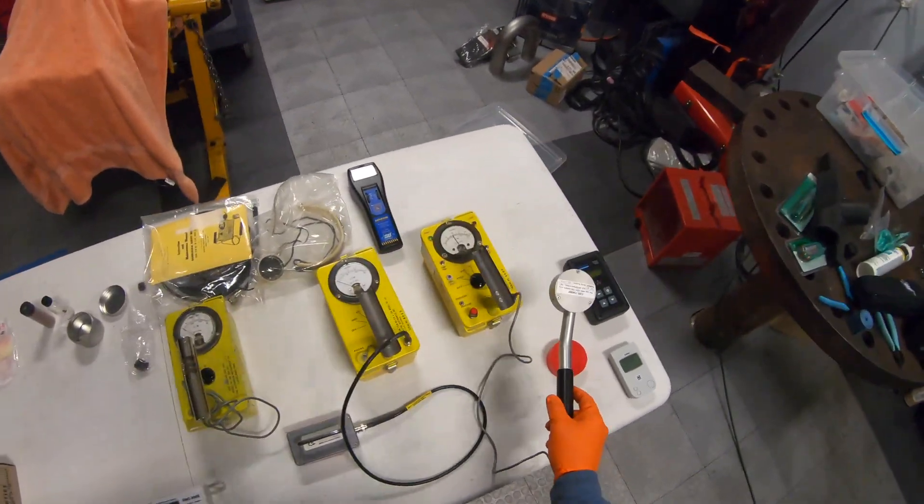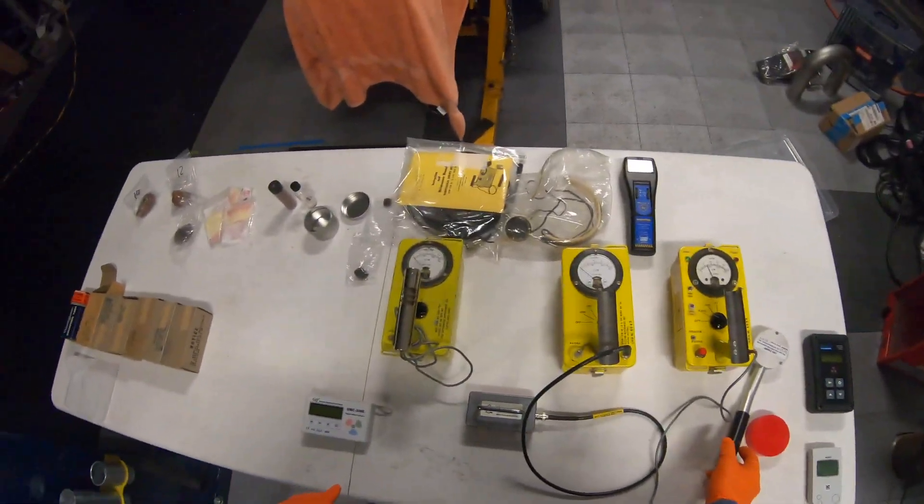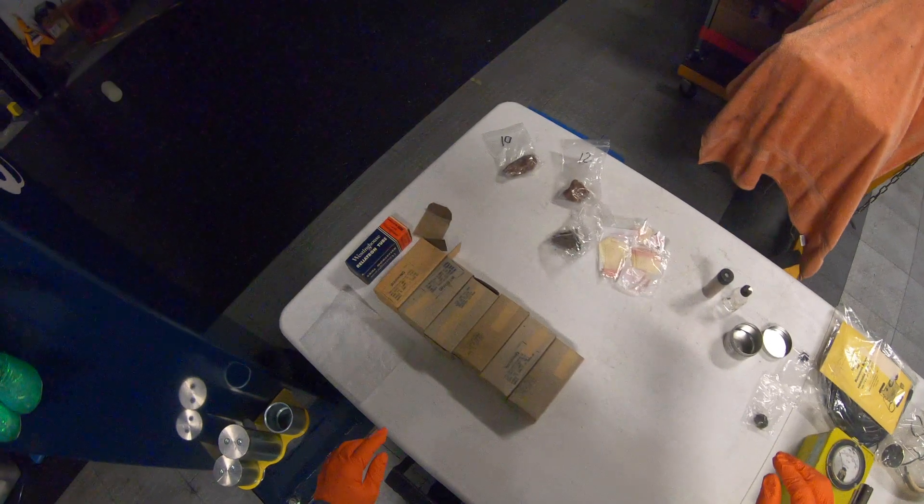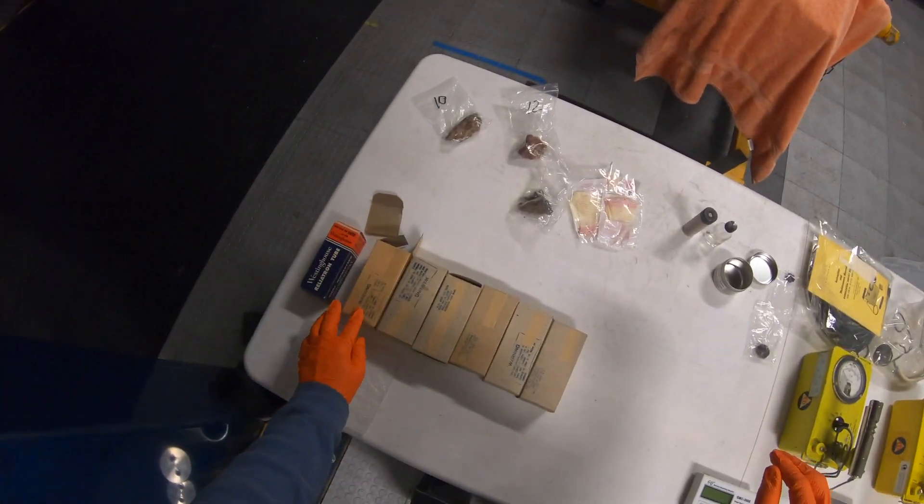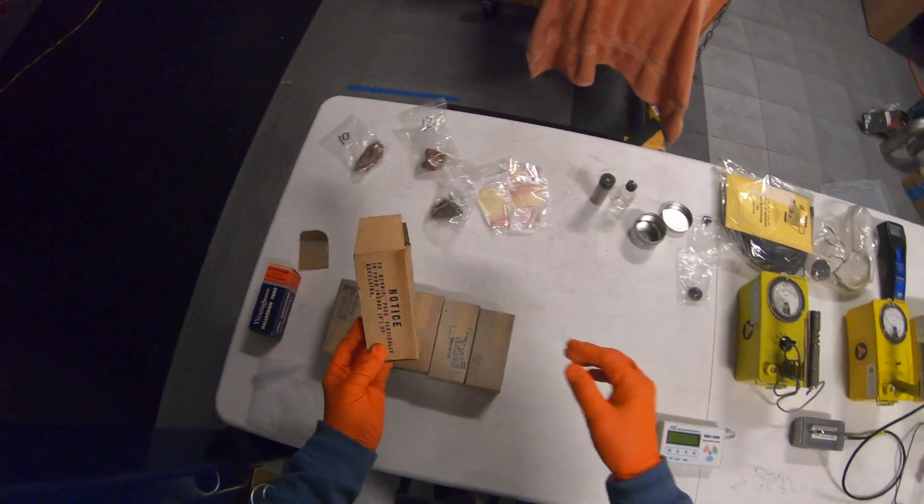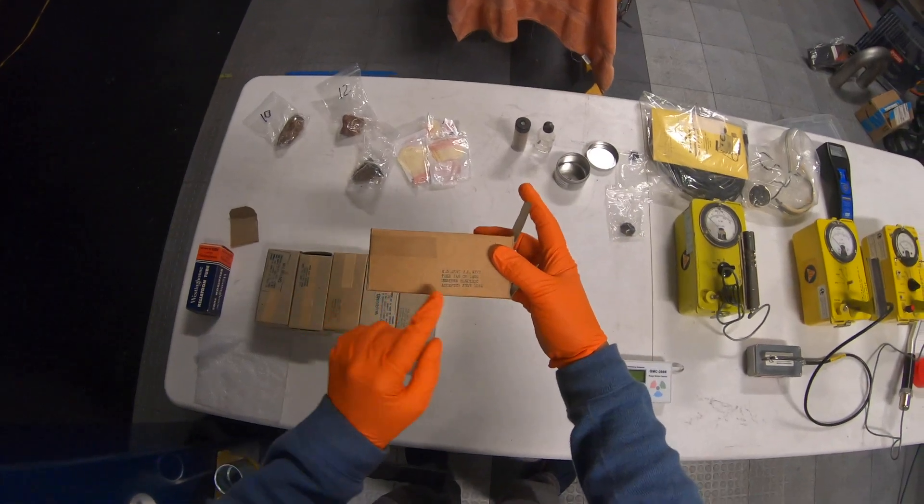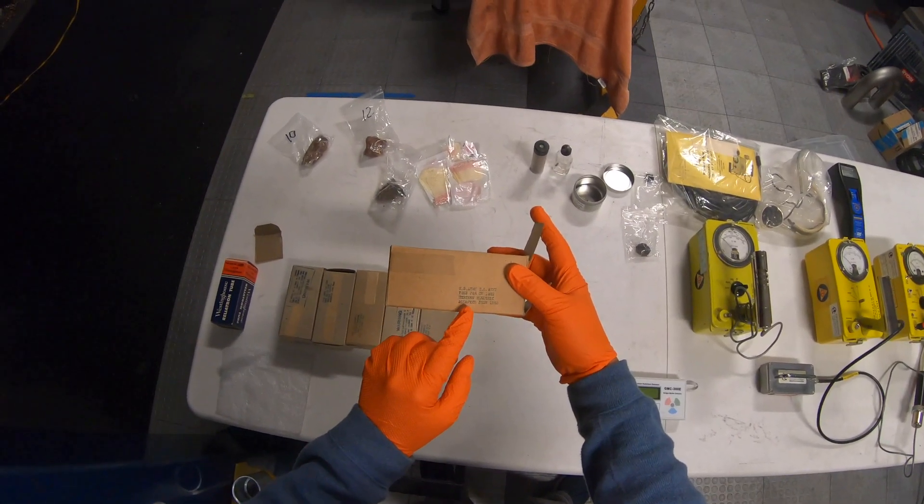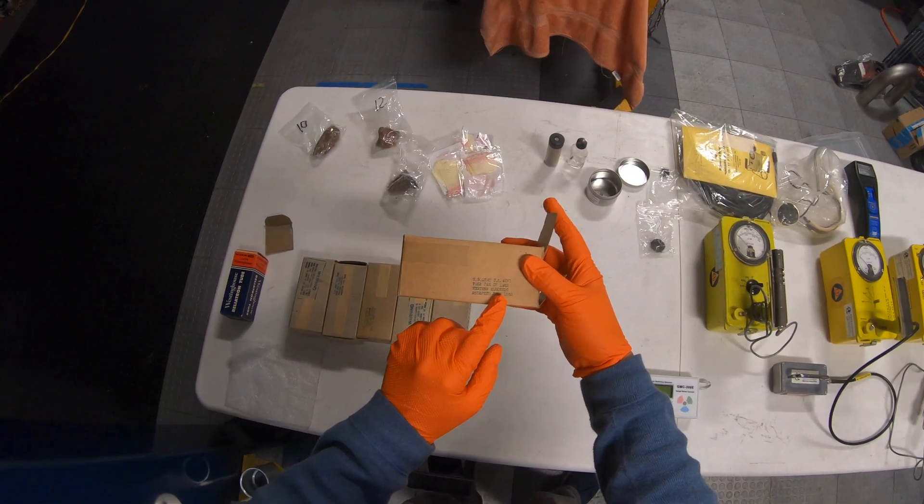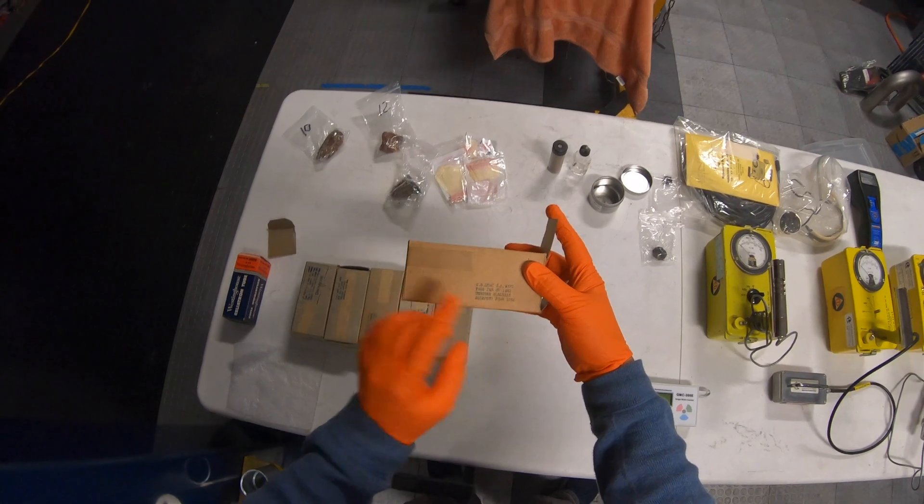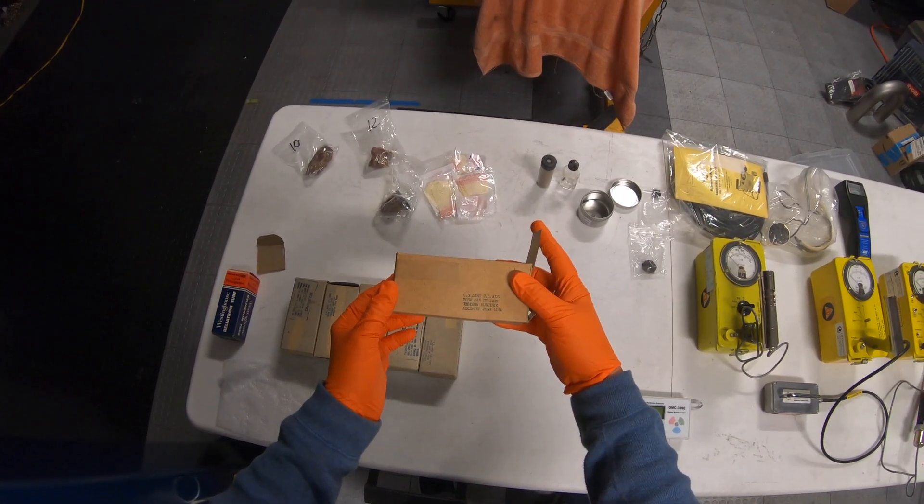And then I also have some tubes. Let's take out one of these here. These are kind of funny. This is U.S. Army, U.S. Navy, tube January. It's a 1B22 tube, accepted in June of 1945. So these are in World War II.